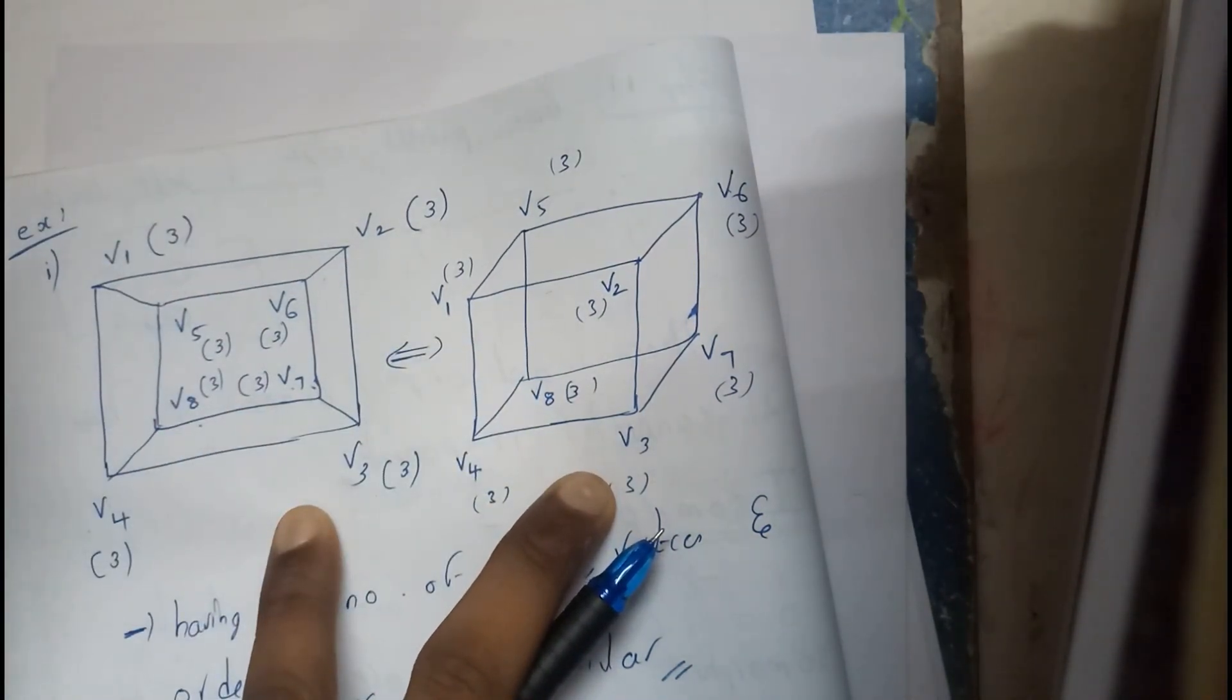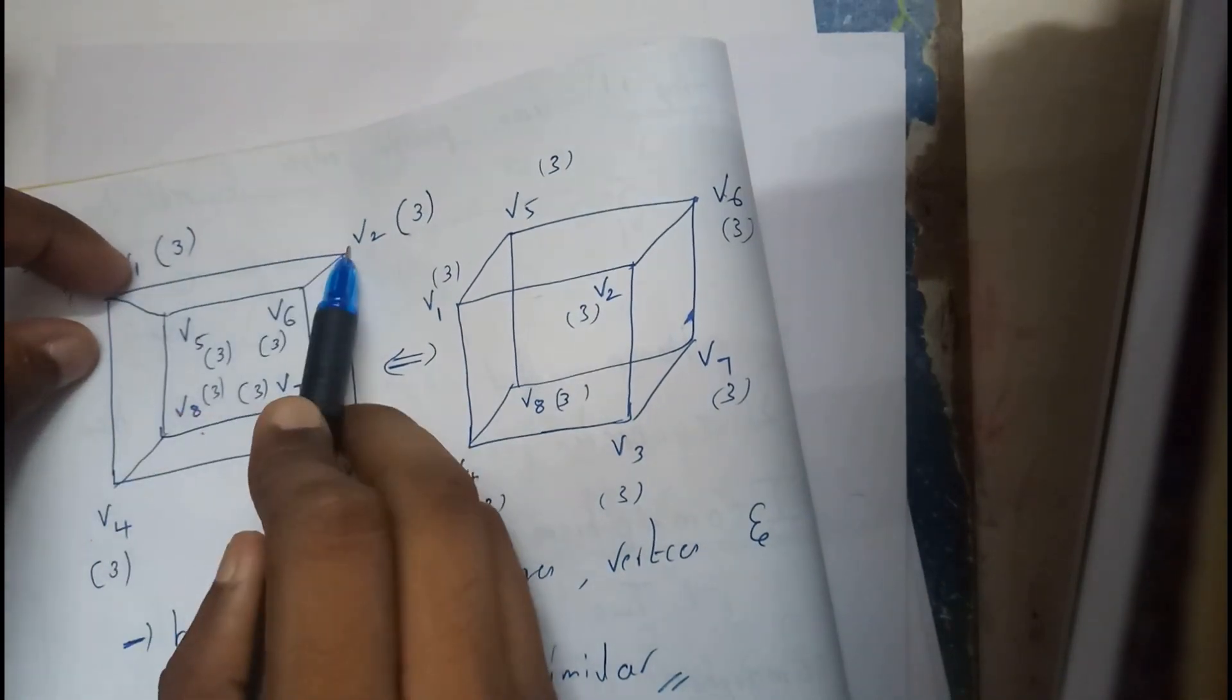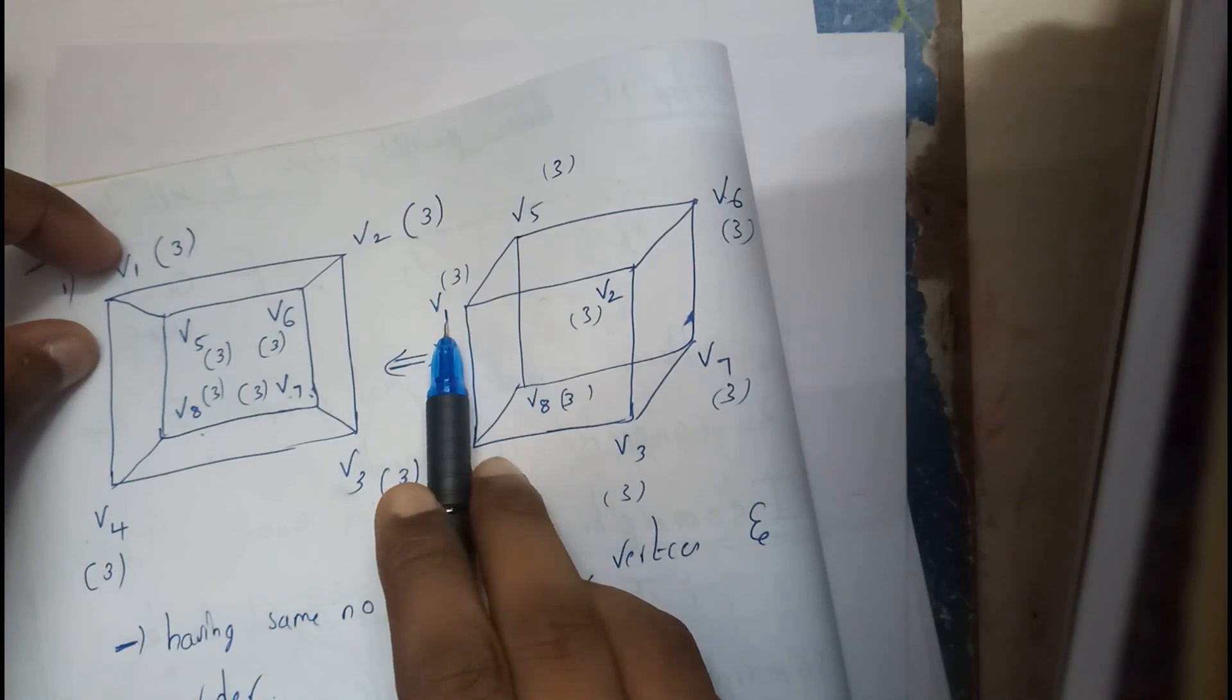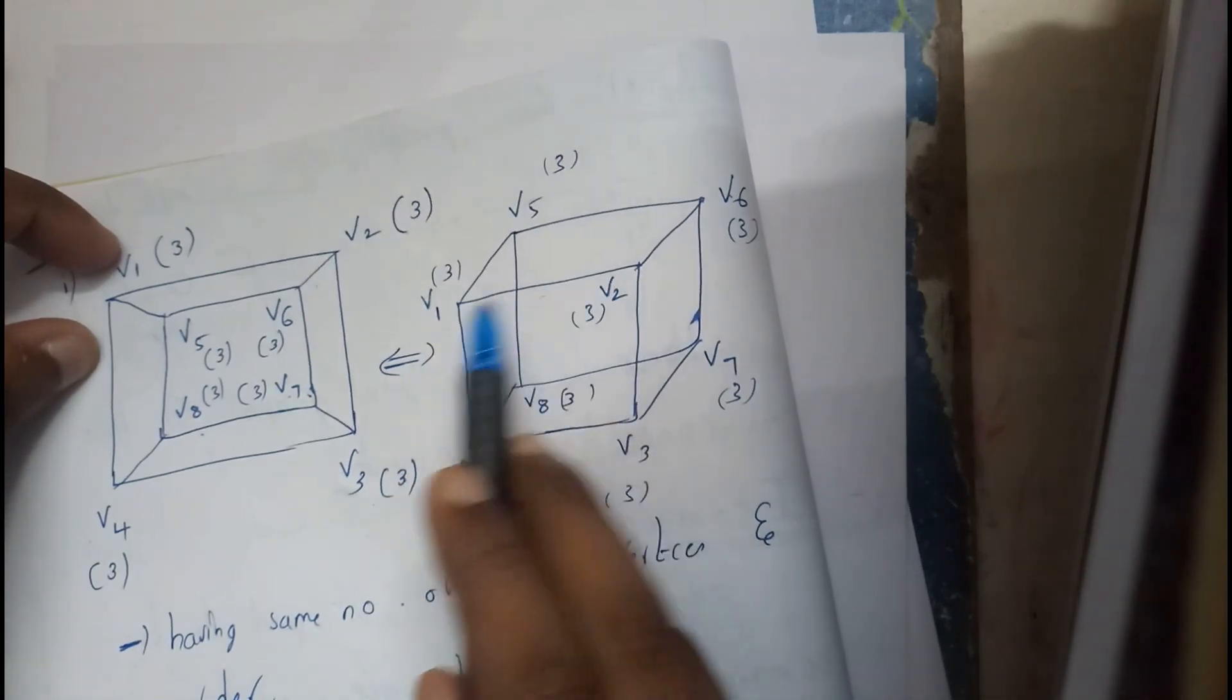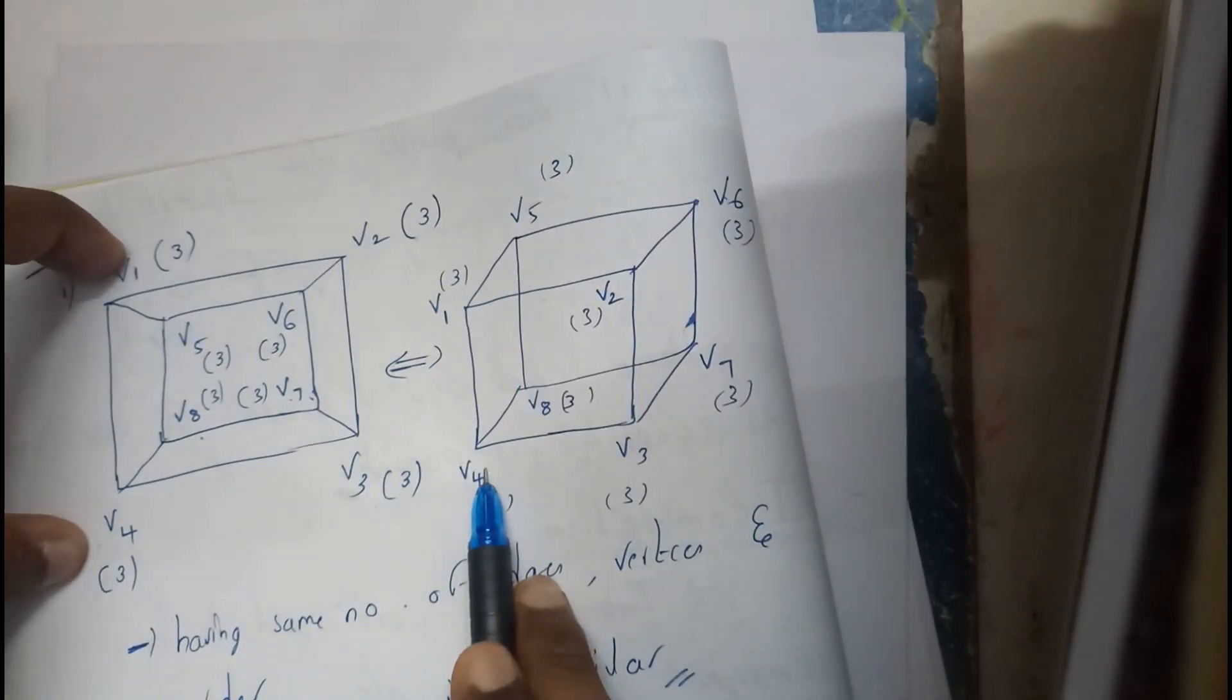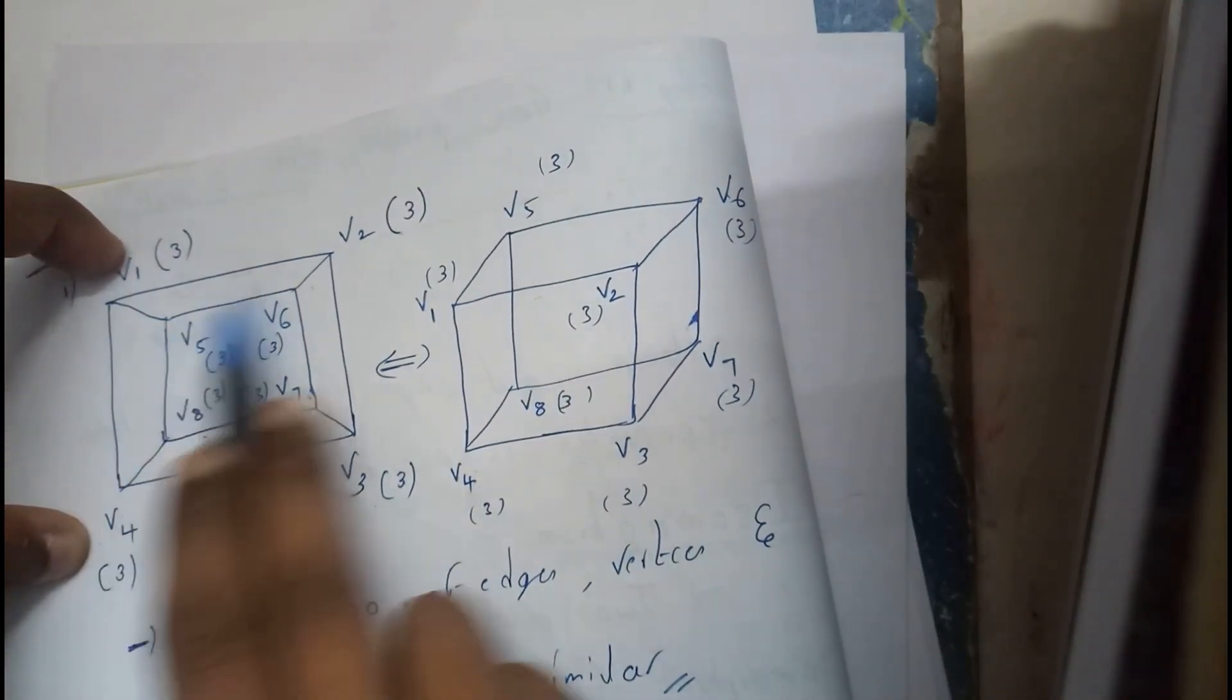Here we are having v1 to v2, here we are having v1 to v2. We are having v1 to v5, we are having v1 to v5. We are having v1 to v4, we are having v1 to v4. Yes, it is isomorphic, everything is similar.